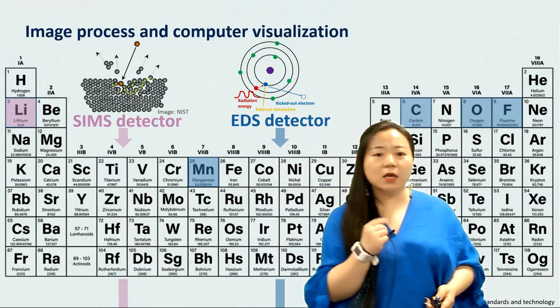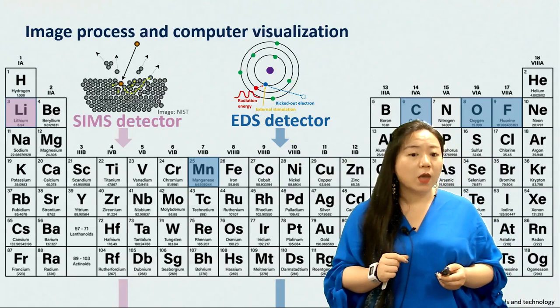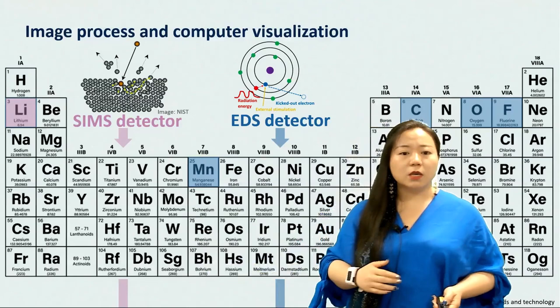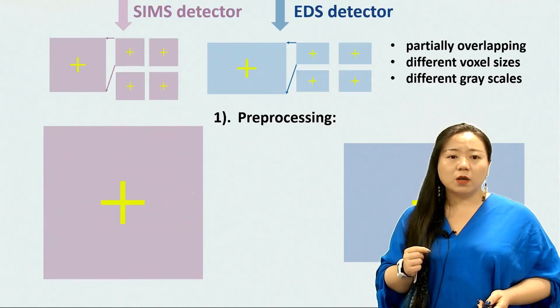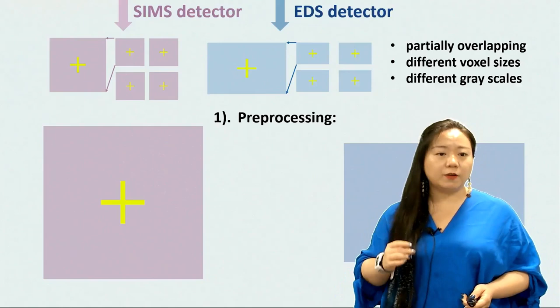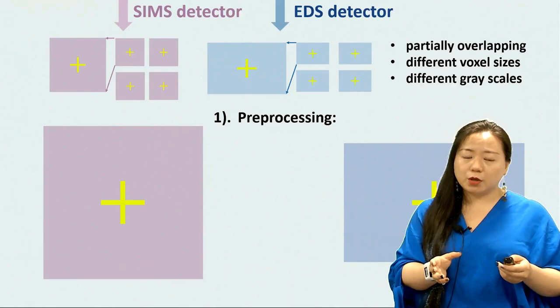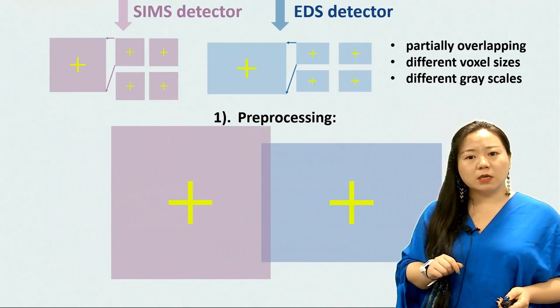As mentioned before, EDS is used for detecting non-lithium elements. For example, for the lithium manganese oxide cathode, we are interested in manganese, carbon, oxygen, and fluorine. We use the SIMS detector to detect lithium. Since we have two datasets from two different detectors, they only partially overlap and have different voxel sizes and different grey scales. Therefore, post-experiment it is necessary to design new algorithms and image processing protocols to combine and merge these two datasets together.